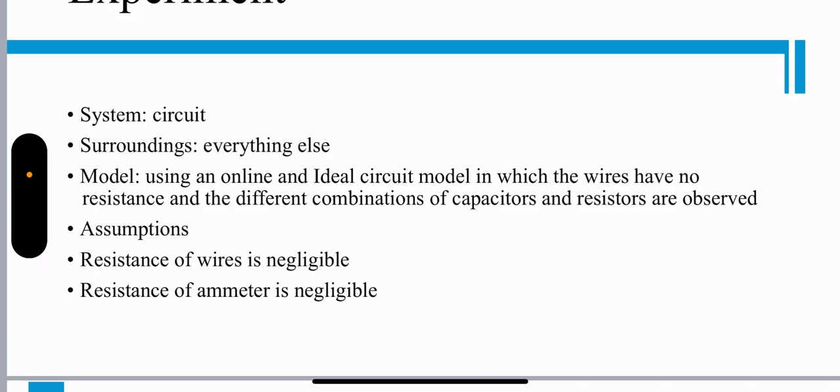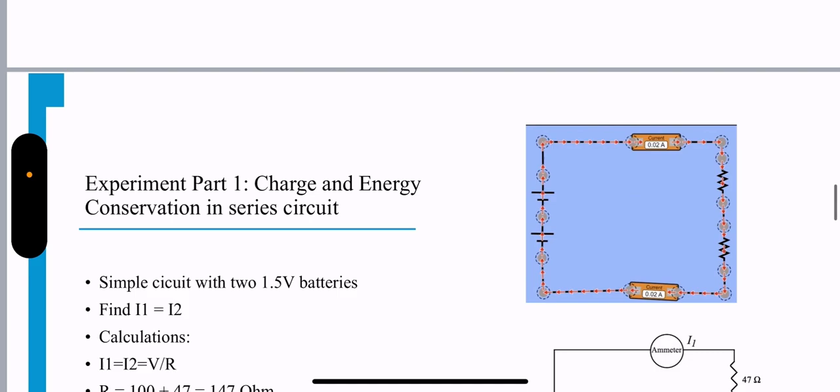Assumptions. Resistance of wires is negligible. The resistance of the ammeter is negligible.